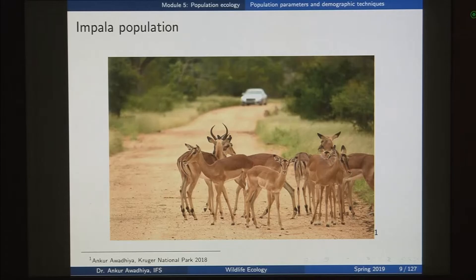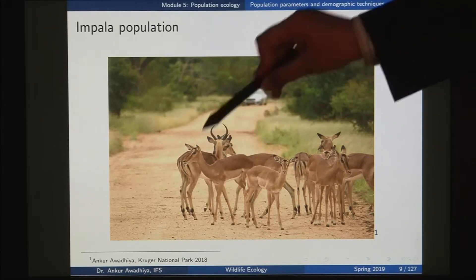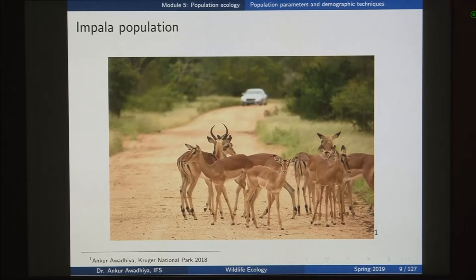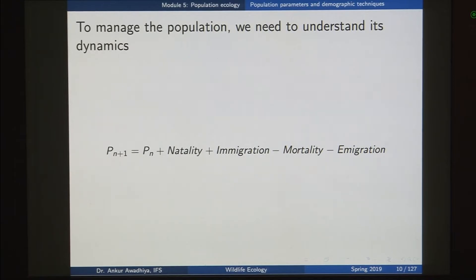For instance, if we need to increase the population of Impalas in this area - why would we want to increase the population of Impalas? Well, Impala are a very important prey population, and so if you have more number of prey you will also with time increase the population of the predators. So if you are managing this area for Cheetahs or for lions, you would want to increase the Impala population. Similarly, in India we want to increase the population of Cheetahs and Sambars so that there is more food available for tigers.